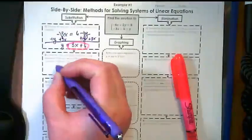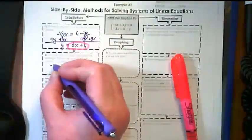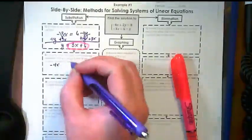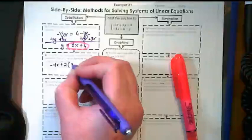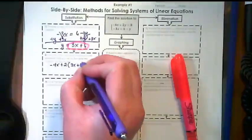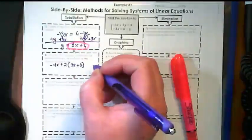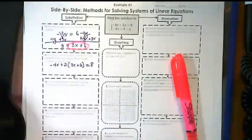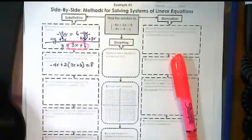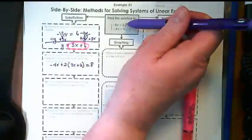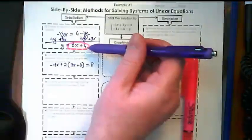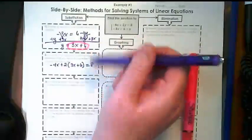So we're going to rewrite this as negative 4x plus 2 times 3x plus 6 equals 8. I've gone back to this first equation, and where the y is, I've subbed in this expression for it.